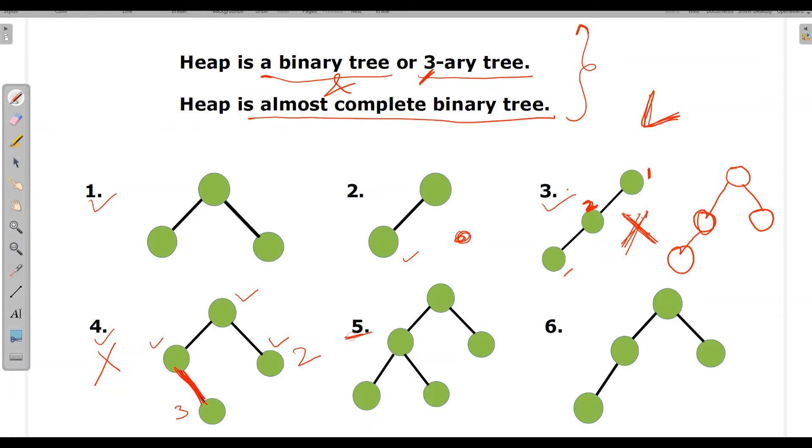When we come to fifth structure, let's check. First it is covering up root, then left and right. That means second level is completely filled. Then coming to third level, it has filled first left and then right. So this is a heap. When we come to sixth structure, root, left, then right, then left. So it is also a heap. So note first point, we cannot go to third level before filling second level and second point, it should fill left first and then right.